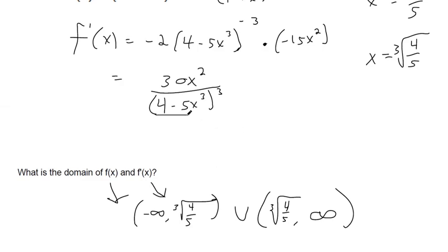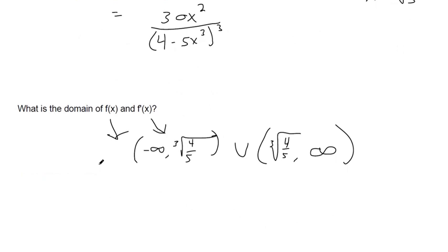Because if you set this equal to zero and solve, we're solving the same exact equation. I just checked. Webassign doesn't write it in interval notation. Webassign writes it like this: x cannot be the cube root of four fifths. It's the same thing just in a different setup.